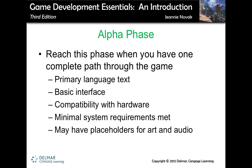Next, you go into the Alpha phase. Once you have one complete path through the game, you have reached Alpha. You're still developing the game, but you can play the game all the way through — it might not have all side quests, but you can go from beginning to end. You have all your primary language text, your basic interface, the game is compatible with the hardware, meets all minimal system requirements, and you might have placeholders for art and audio.